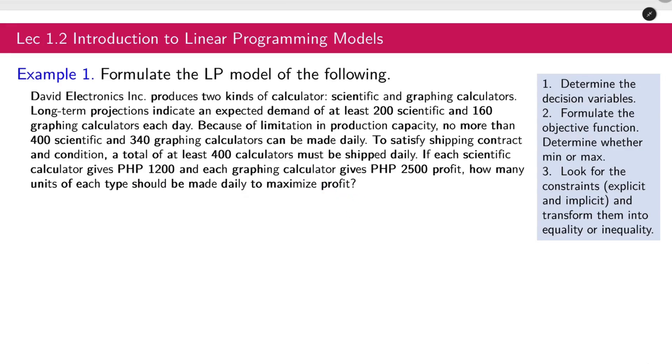If each scientific calculator gives 1,200 and each graphing calculator gives 2,500 pesos profit, how many units of each type should be made daily to maximize the profit? As you can see, it's really overwhelming because that's a lot of words. Now, what is the technique to determine the decision variables? Take a look at the final question.